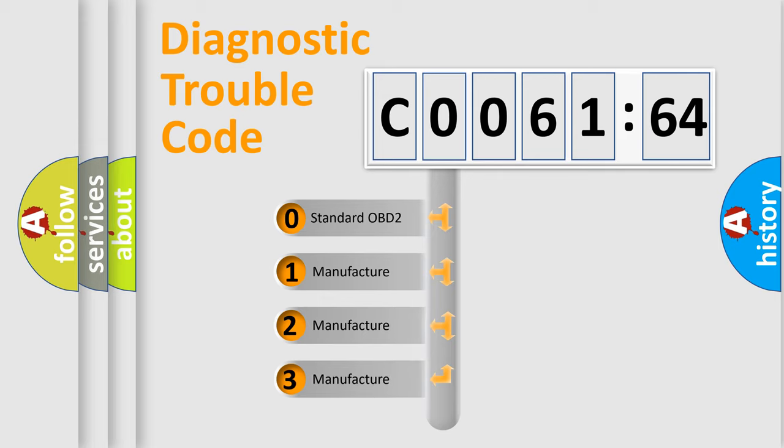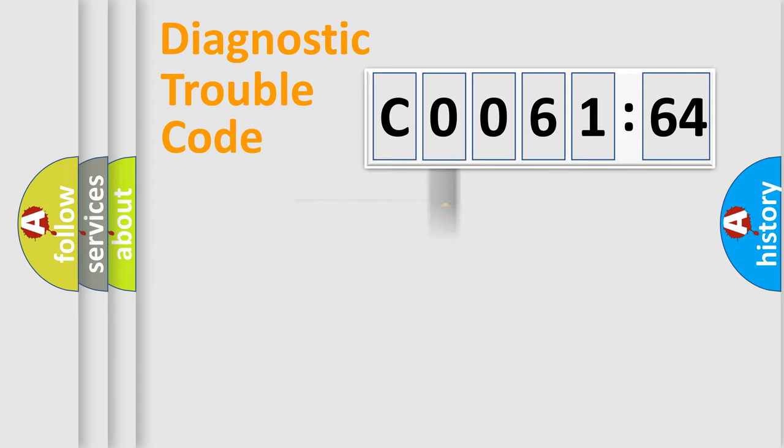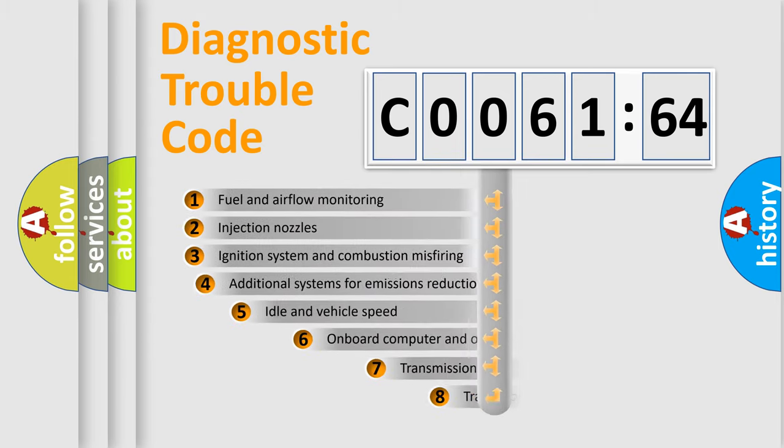If the second character is expressed as zero, it is a standardized error. In the case of numbers 1, 2, or 3, it is a manufacturer-specific expression of the car-specific error.